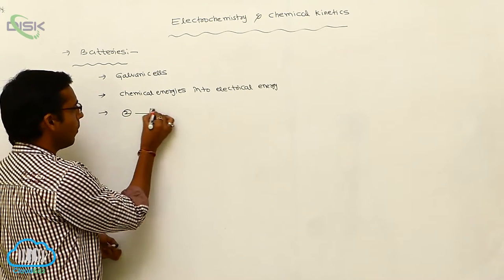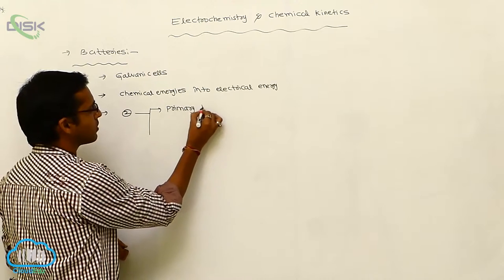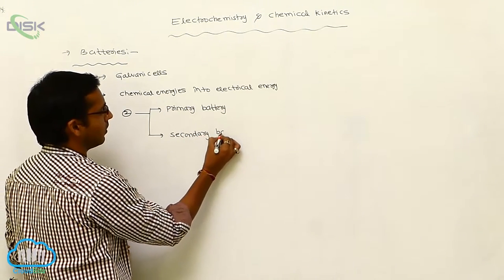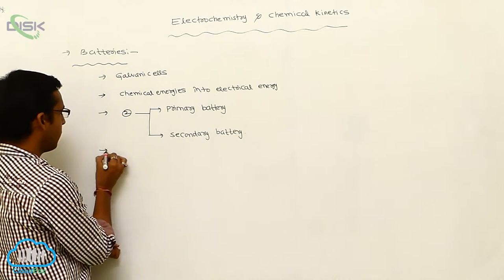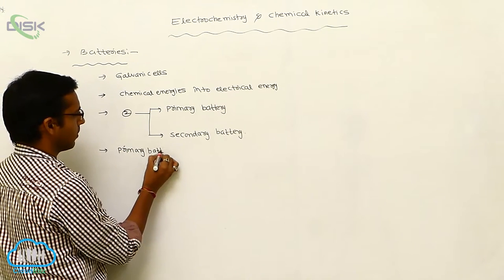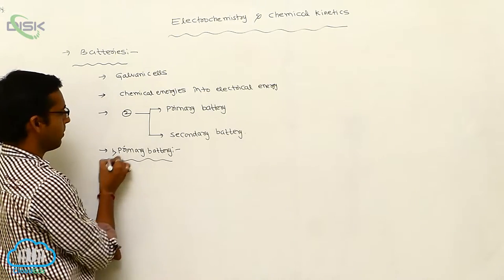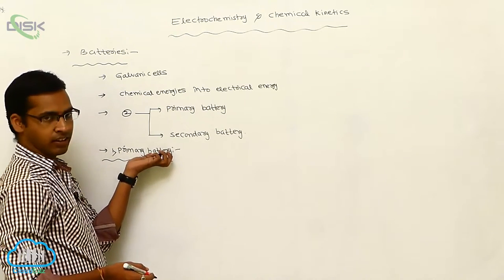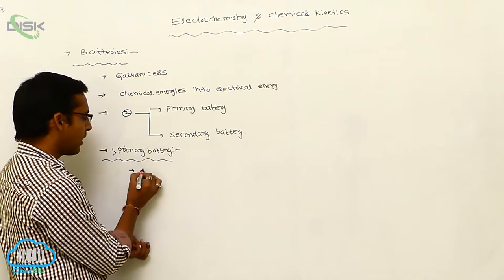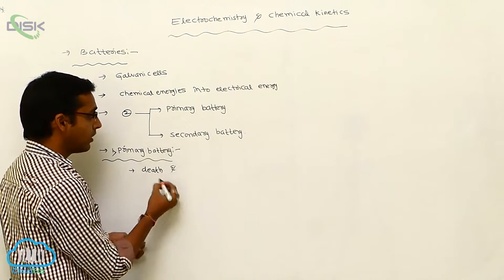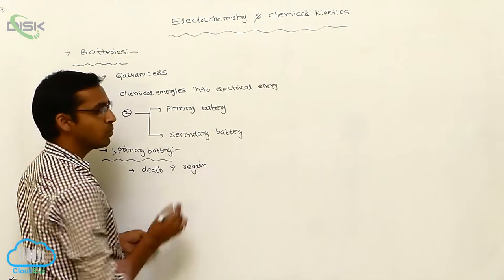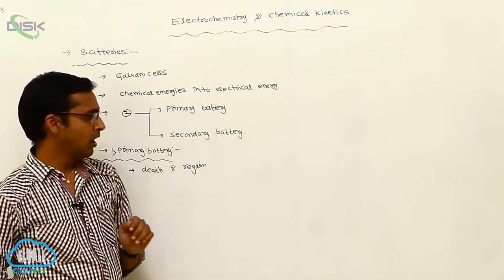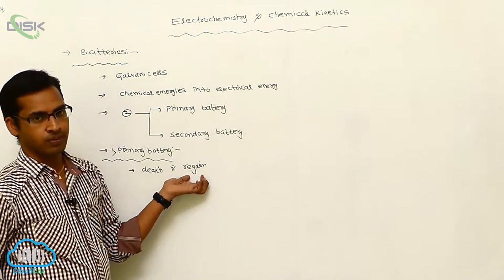Batteries are classified into two types: primary batteries and secondary batteries. A primary battery, after use for a period of time, undergoes discharge and there is no further use — it cannot be recharged. Such batteries are used only for a limited period of time.